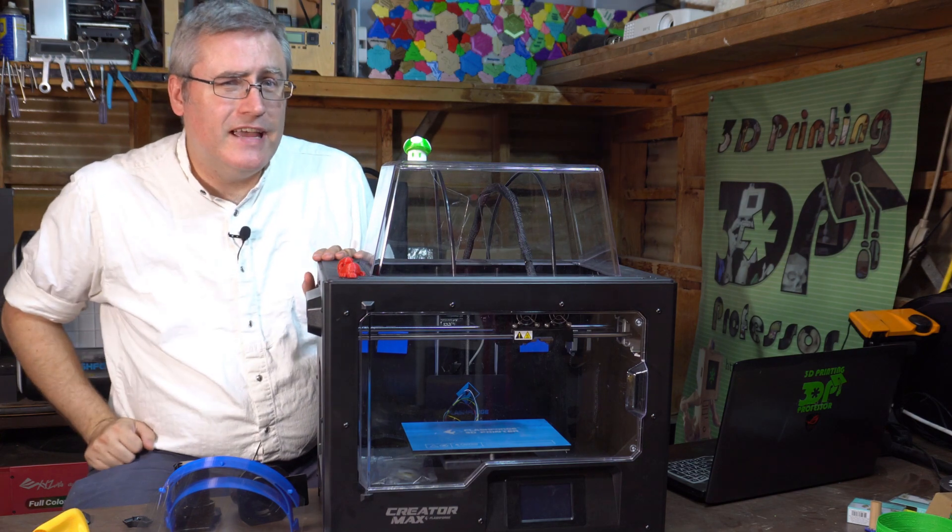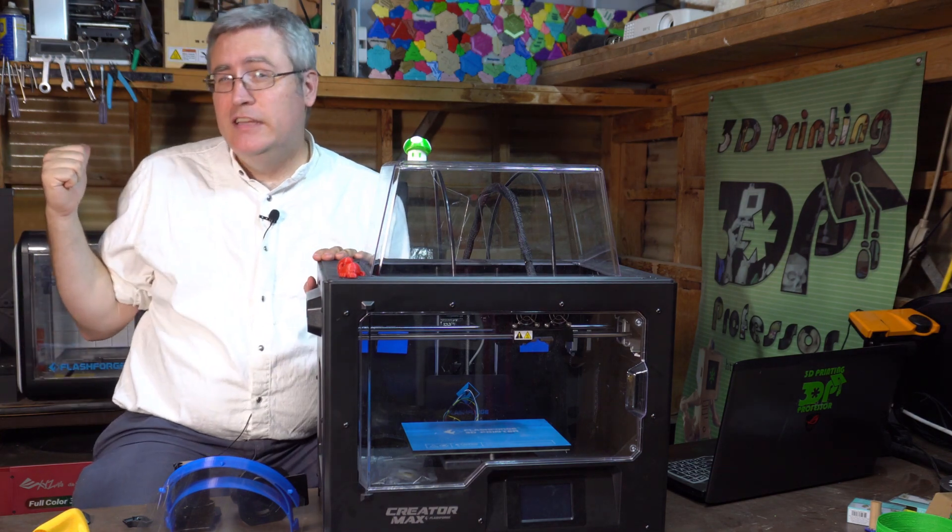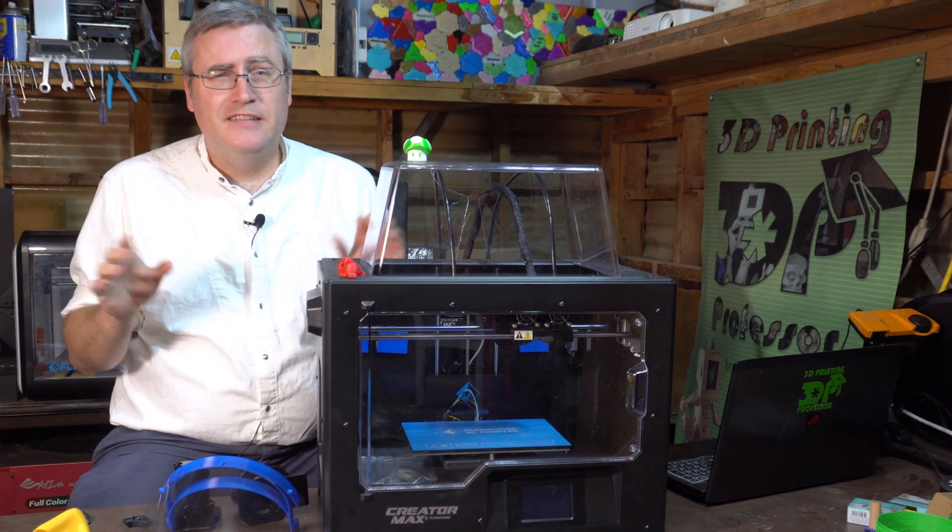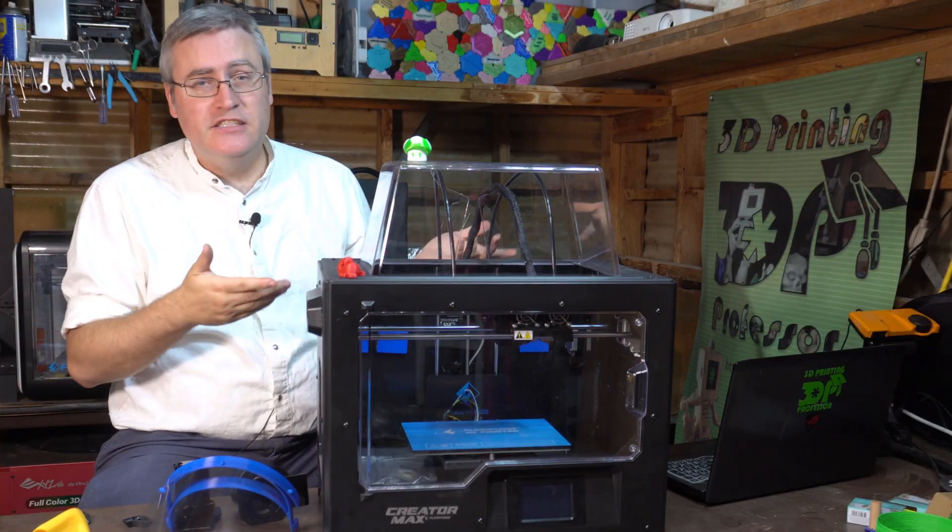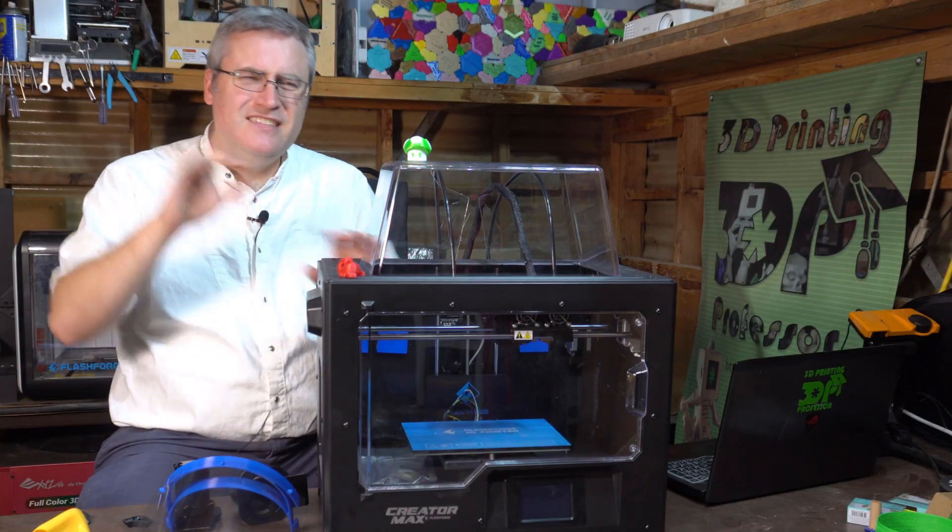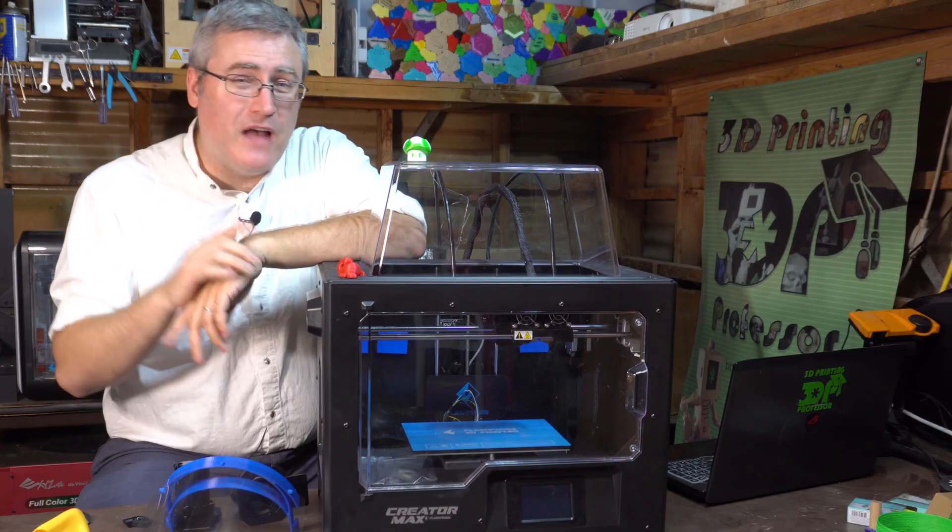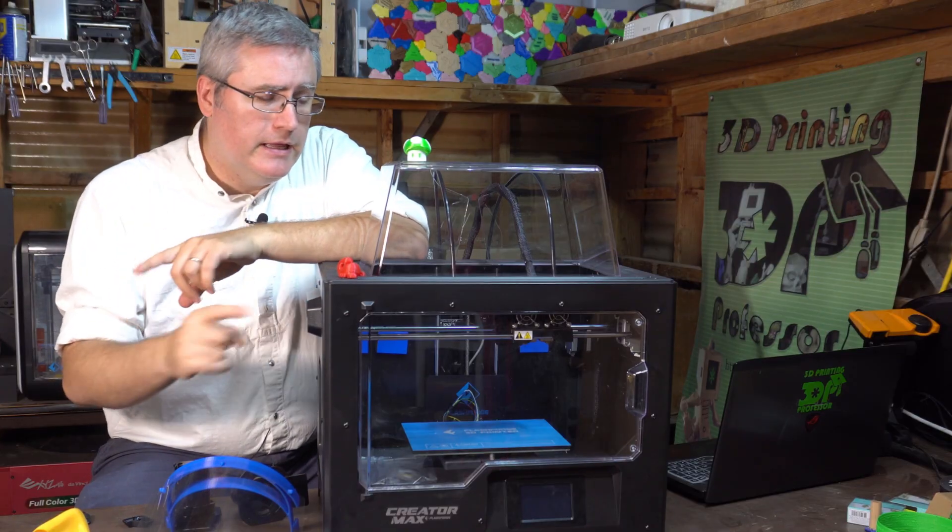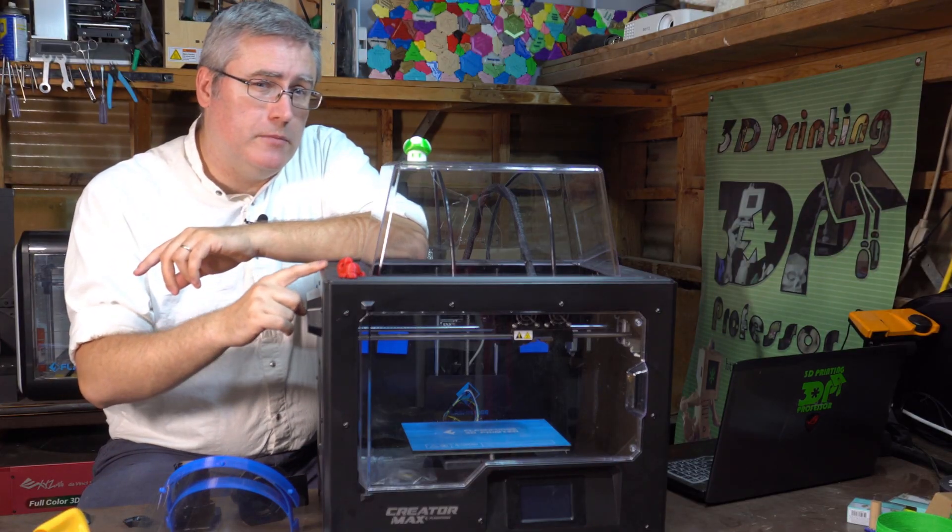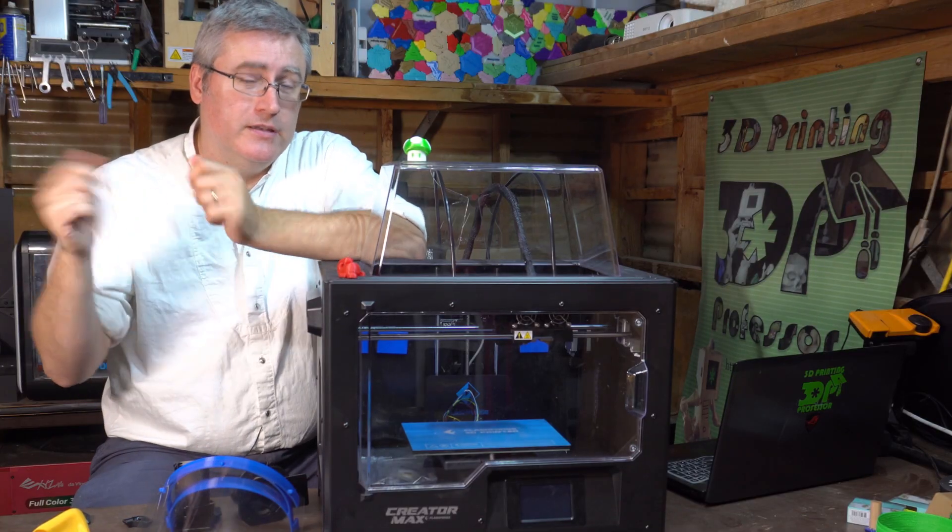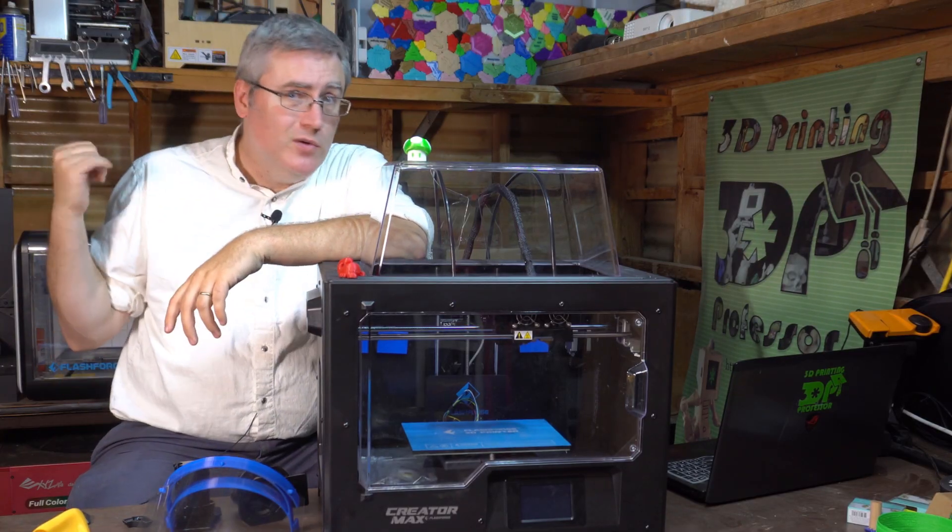You know, filament out detection would be great. Again, you got it on the Adventure 3. I recognize that's new hardware and it is on the S, so I'm not complaining, but I would love that. And, you know, talking about things that I would love, I would pay money if I could get an upgrade that would allow me to remove the build plate so I can pop prints off just like I do on the Adventure 3.